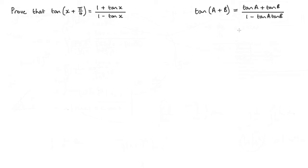The tangent of a plus b is equal to tan a plus tan b over 1 minus tan a tan b. So in our case, a is x and b is pi over 4.